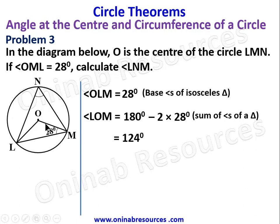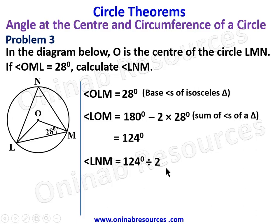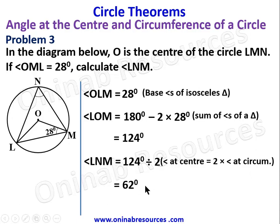We have the angle at the center, which is connected to angle LNM. So angle LNM equals 124 degrees divided by 2 — angle at center is twice angle at circumference — which gives 62 degrees. Problem three is complete.